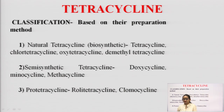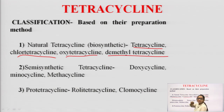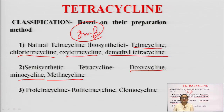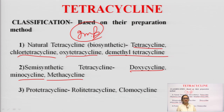The second basis for classification is preparation method. Naturally obtained tetracyclines include tetracycline, chlortetracycline, oxytetracycline, and demethyltetracycline. Semi-synthetic tetracyclines include doxycycline, minocycline, and methacycline. Pro-tetracyclines are prodrugs designed to increase bioavailability and lipid solubility — examples are rolitetracycline and clomocycline.